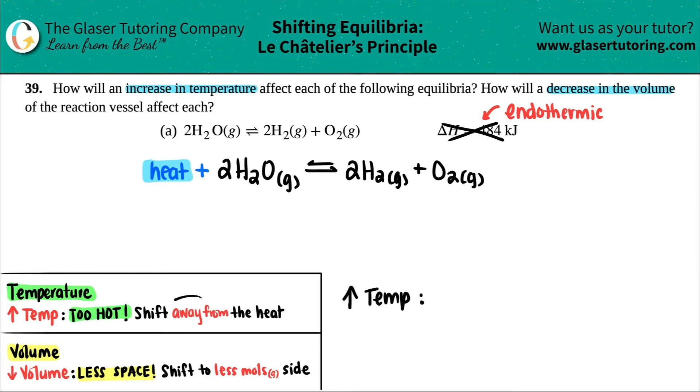So in that case, I will go away from the heat. So shift away from the heat. Literally, you shift away from the word heat. That's why I like to write the word heat on this equation. So if it's too hot, I'm not going towards the heat. I'm going away from the heat.